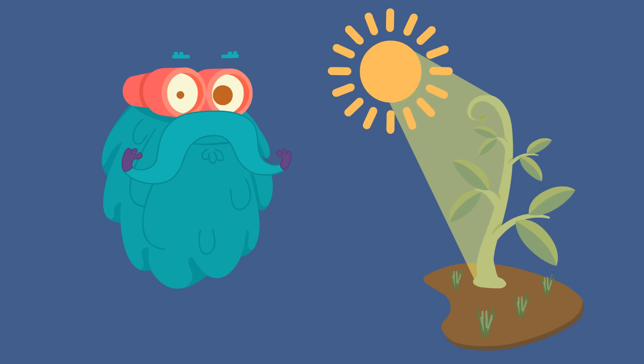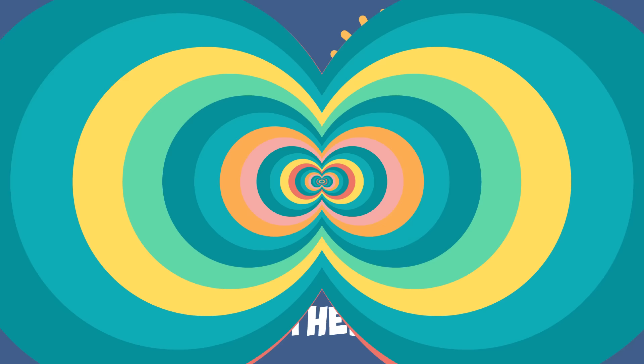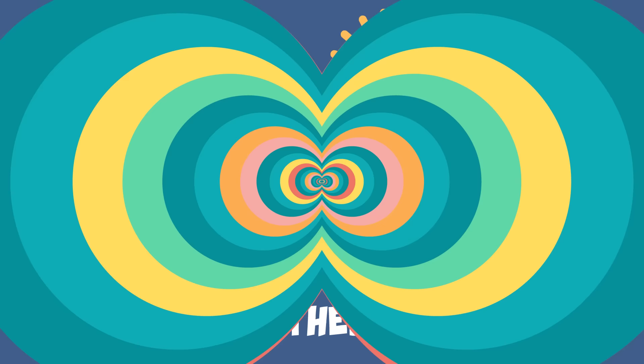Trivia time! Plants use energy from sunlight during photosynthesis. Only 10% of energy in a light bulb is used to create light. 90% of a light bulb's energy creates heat.